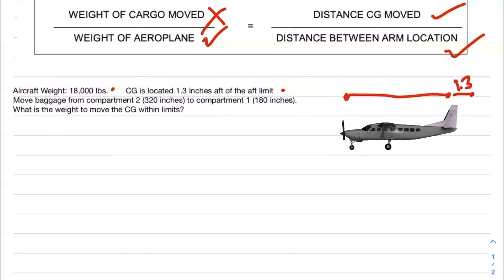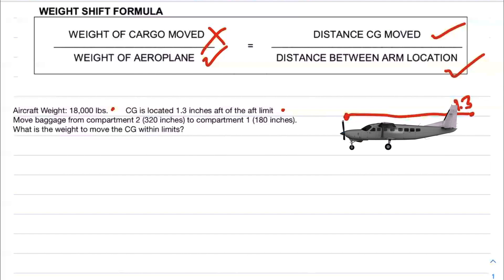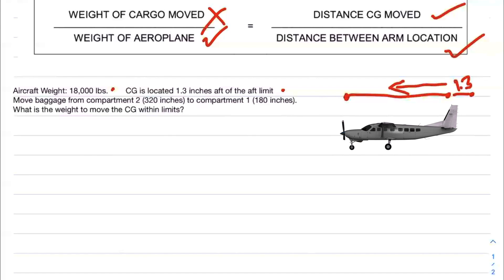That means the aircraft is way too tail heavy and not safe. We want to move that CG forward to bring it within limits. You can also have a CG forward of the forward limit - even that's not safe. In that case, you would bring it back. But in this case, the CG is aft of the aft limit. The question is, how much weight do you have to bring forward to get the CG within limits? Let's do that.